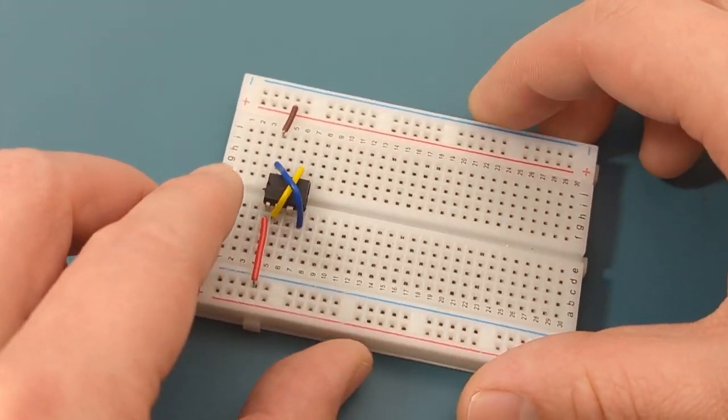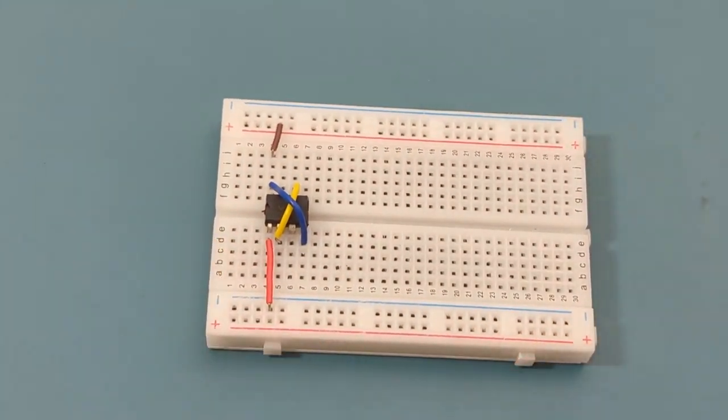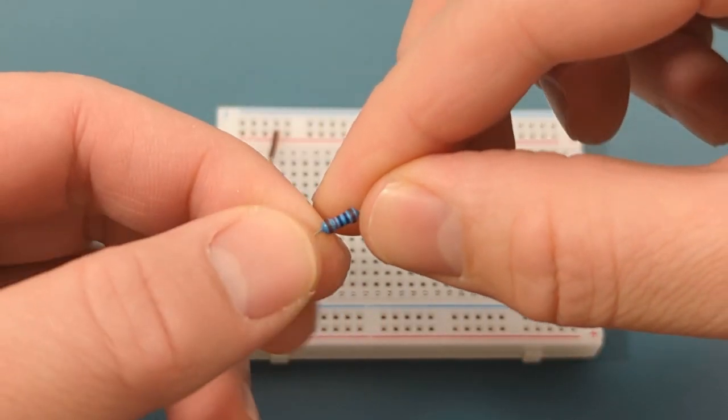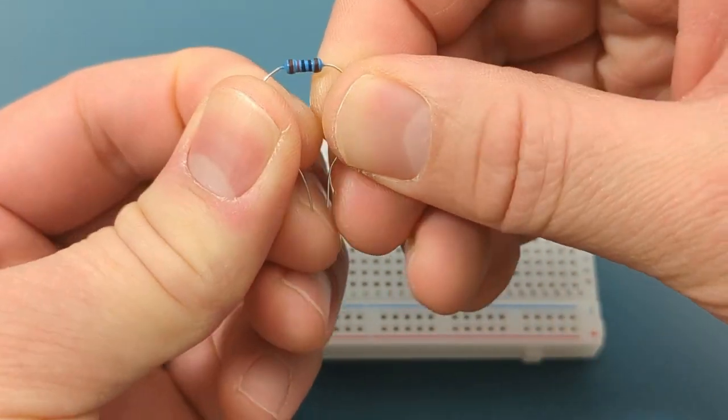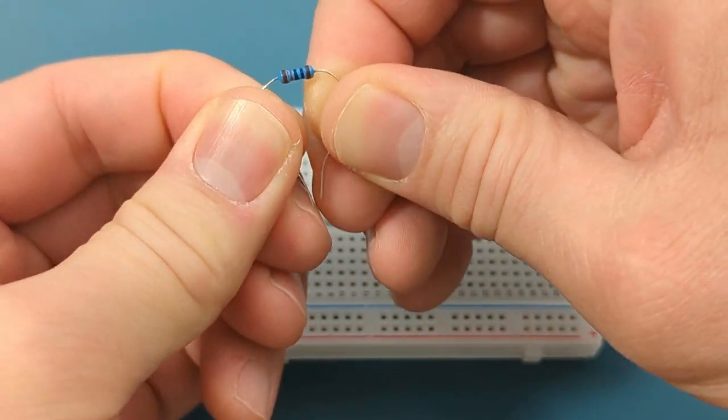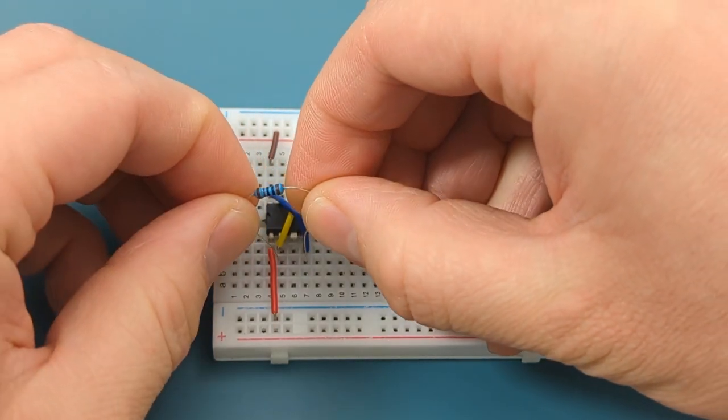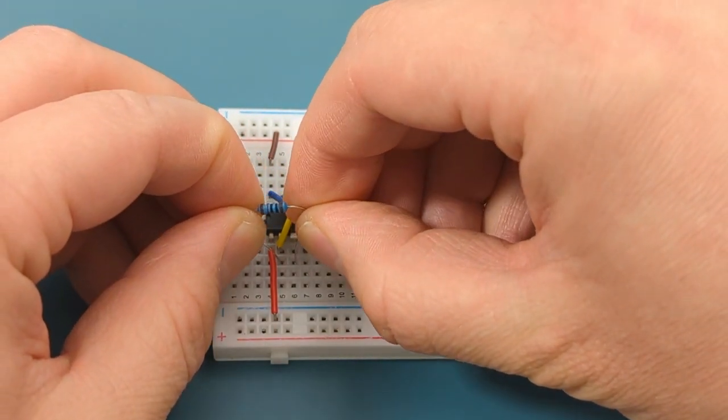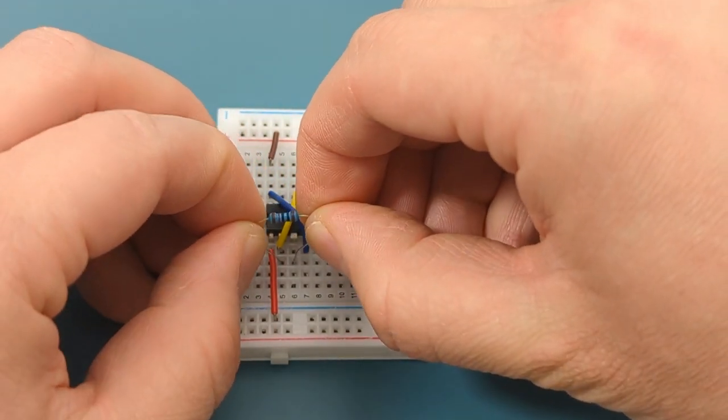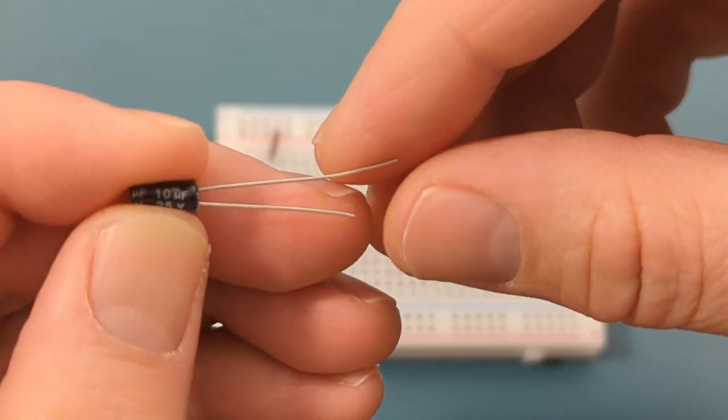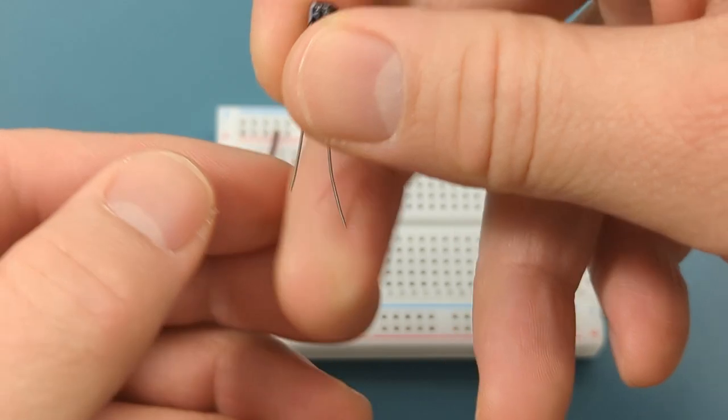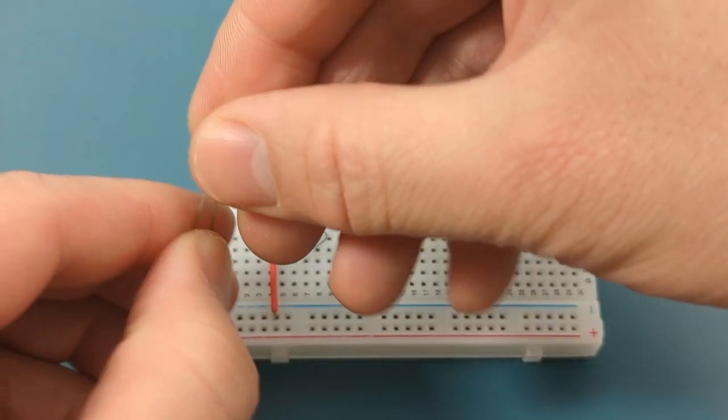Turn the breadboard to the side. Bend the ends of a 100,000 ohm resistor. Insert the 100,000 ohm resistor to pin 2 or trigger and pin 3 or output. Insert a 10 microfarad capacitor to pin 2 or trigger and the negative rail. Insert the shorter leg into the negative rail.